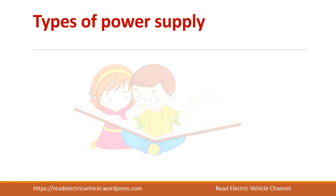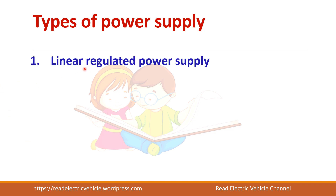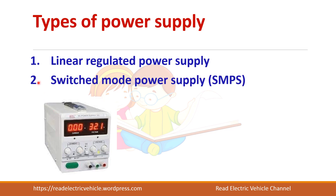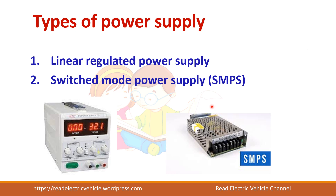There are two types of power supply unit: one is linear regulated power supply, which we use in the laboratory. The other one is switched mode power supply, which is used in most electronic equipments like TVs and computers — you can see a small power supply unit there which is basically an SMPS.